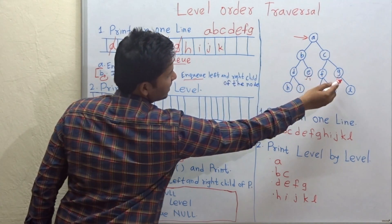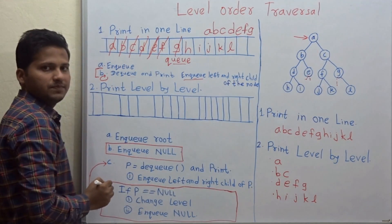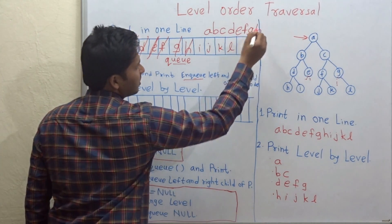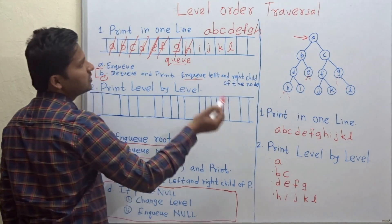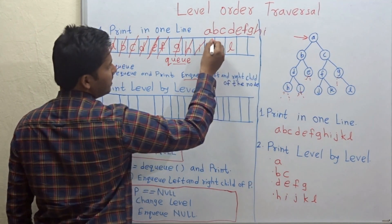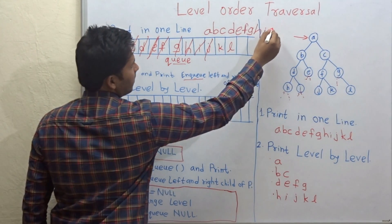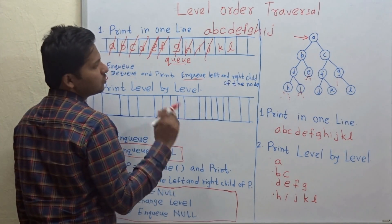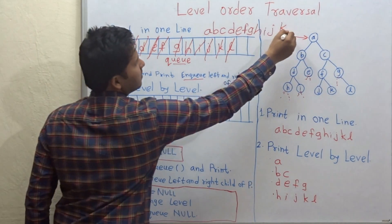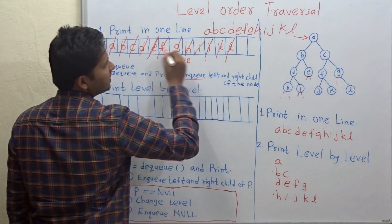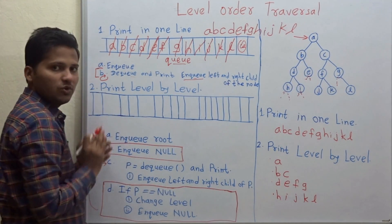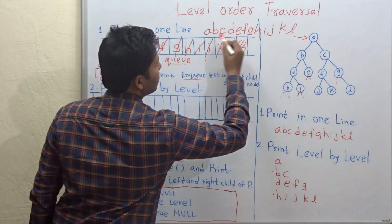Dequeue F and check its children: J and K — enqueue them. Dequeue G and print — the right child is L, so enqueue it. Dequeue H — no children. Dequeue I — no children. Dequeue J — no children. Dequeue K — no children. Dequeue L — no children. Now the queue is empty, there is nothing to dequeue. So we are done with our algorithm and have printed the level order traversal in one line.